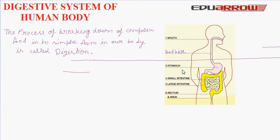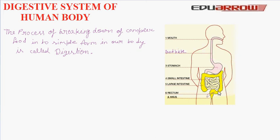Now, all the food cannot be digested or absorbed by the blood. So, undigested food remains and goes into the large intestine, which is much wider and shorter than the small intestine. It absorbs water from the food waste and passes it to the kidneys. The remaining solid waste goes out of the body through the anus.